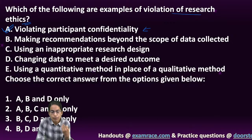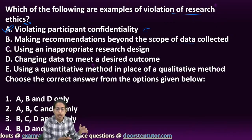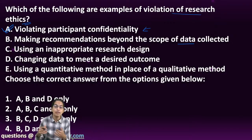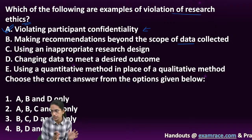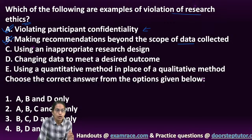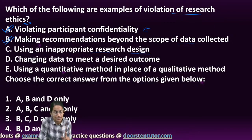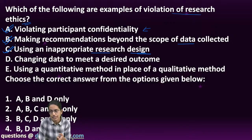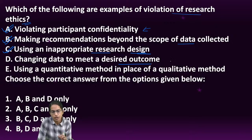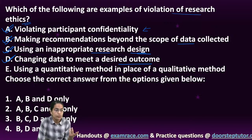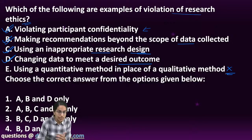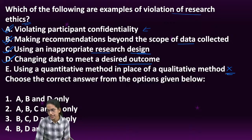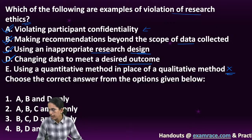For example, if I collect data only on literacy but give research results regarding health parameters, that's beyond the scope of the study. Using an inappropriate research design is again a violation of ethical guidelines. Changing the data to meet the outcome is the most common violation of ethical research. However, using a quantitative method in place of another is not a violation - you can use whatever method you want. So A, B, C, and D would be the violations of ethical guidelines.